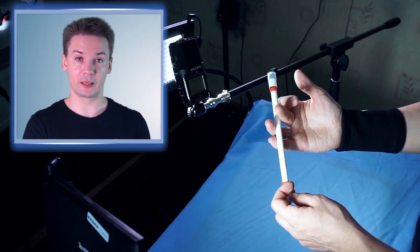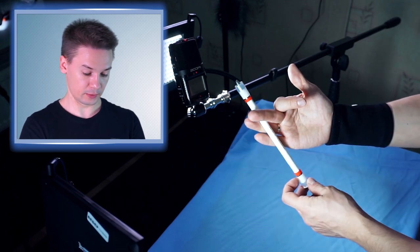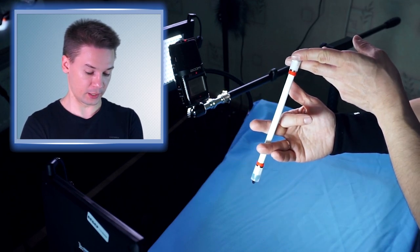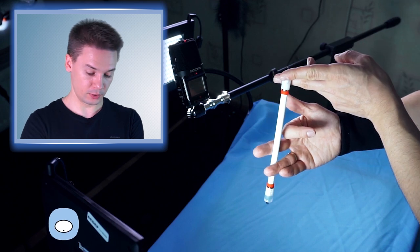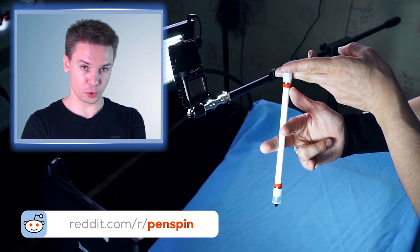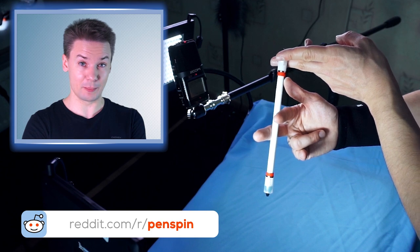Basically you need to let Pen pass over your index finger, like this, and when it is pointing up, you need to straighten index finger. Also you need to curve ring finger at the very same moment.